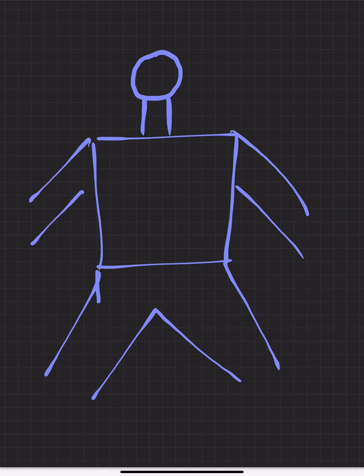Consider this rough diagram: this is the head and neck region, this is the thorax, and this is the abdomen. The structure dividing the thorax and abdomen is the diaphragm — the thoraco-abdominal diaphragm. Below that we have the lower limb, the pelvis region, the perineum region, and these are the upper limbs.